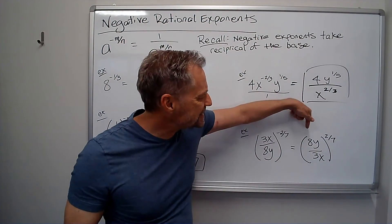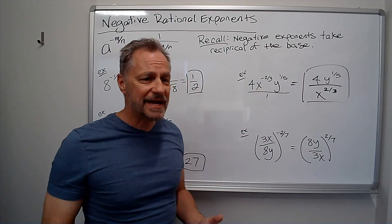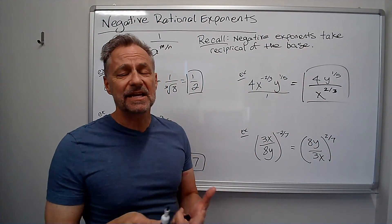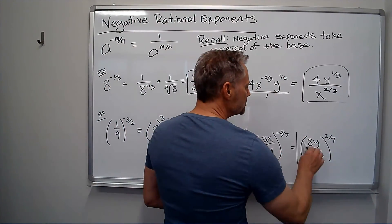And from other properties, I can distribute this in, but nothing's going to simplify here. I'm just going to leave it there because I got rid of the negative exponent. Nothing else really simplifies, so I'm just going to leave that as my answer.